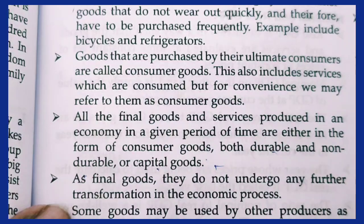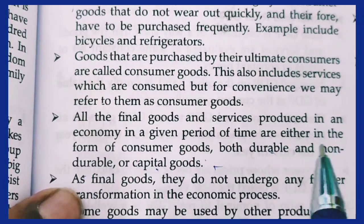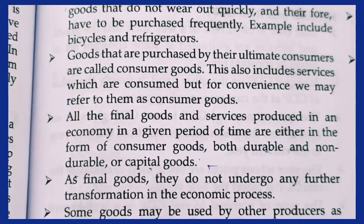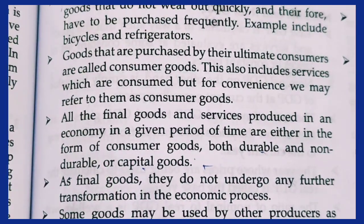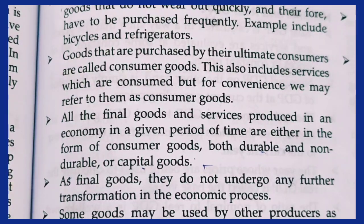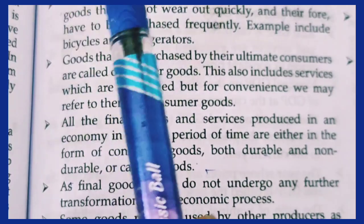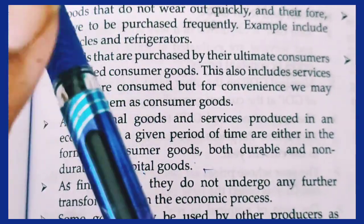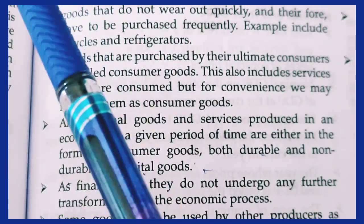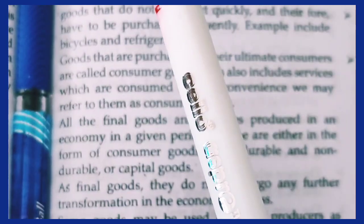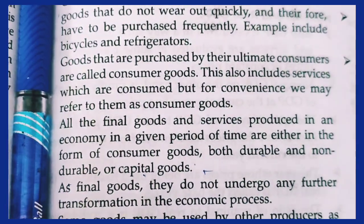Goods and services in their final stage fall into three types: consumer goods, durable goods, and non-durable goods. For example, a pen is durable since you can refill and reuse it. The refill itself, however, is a non-durable good because it gets used up.